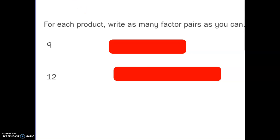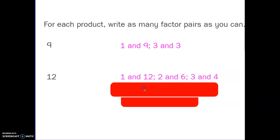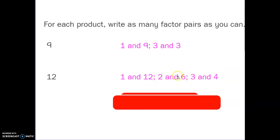Pause the video while you do that and come back when you are finished. So what did you get for 9? One and 9, and 3 and 3. These are the factor pairs for 9. And the factor pairs for 12 are 1 and 12, 2 and 6, 3 and 4.